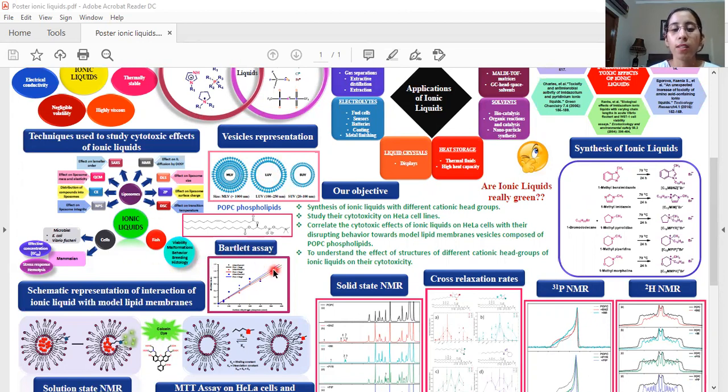And the Bartlett assay which is a UV visible spectrometric based method is used to determine the number of phospholipids in this vesicle structure.